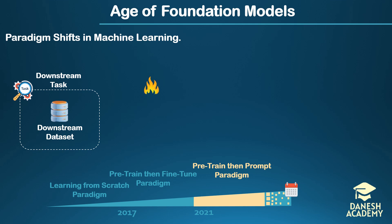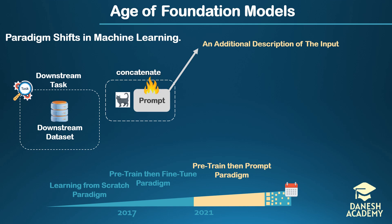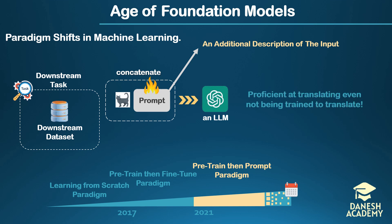Therefore, the idea of fine-tuning was going to be replaced. In this new method, instances of the downstream task are concatenated with an additional description as hints to the foundation model to better understand the downstream task at hand. This concatenated dataset plus additional hint — named the prompt — is then passed through the foundation model. As an example, GPT models were surprisingly adept at translating tasks when you prompt them to translate.